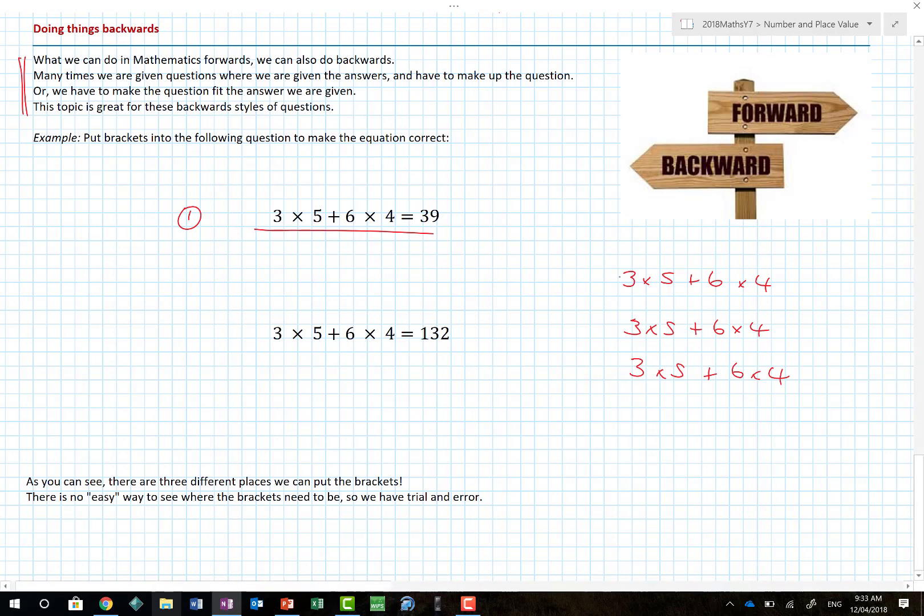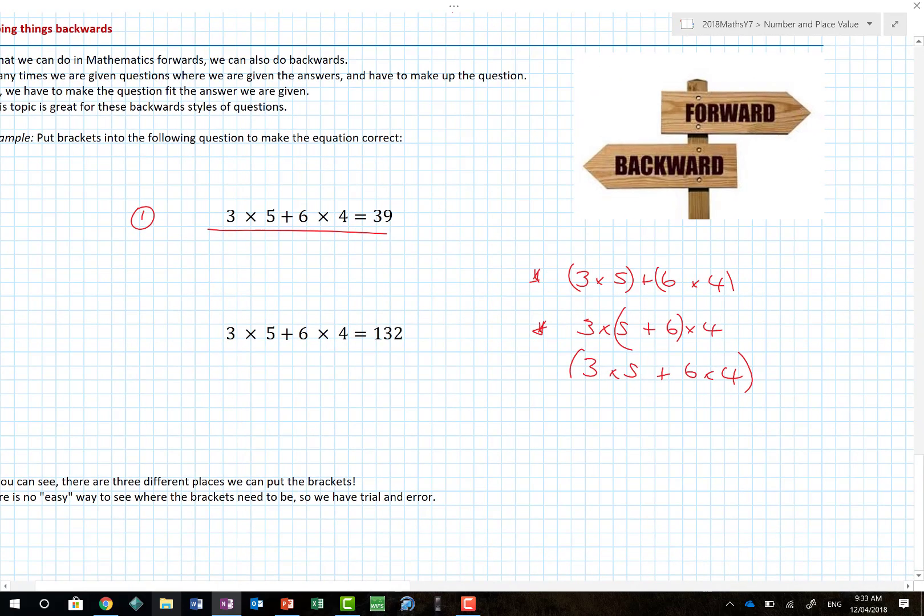Now if I write this out longhand, 3 × 5 + 6 × 4, we can actually put brackets in three different places. The brackets could go around there, the brackets could go around there, or the brackets could go around there, which actually makes no sense at all. So realistically speaking, you're looking at these two examples here. Let's just see what happens when I do this first example. Well 3 × 5 is 15. I'm going to add on 6 × 4, which is 24, and that in fact gives me 39. So there we go, I now can see that to make this question correct, that actually has to have the brackets around there.